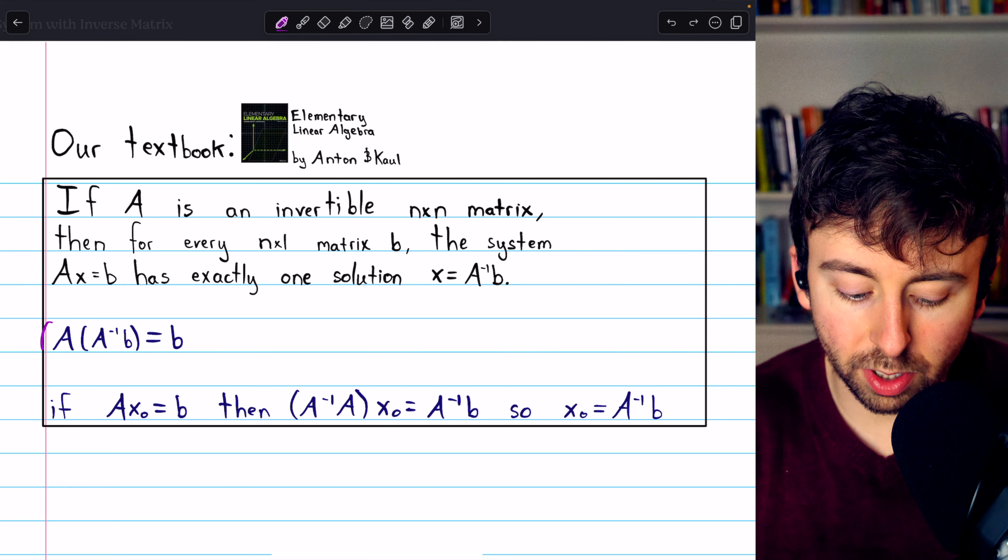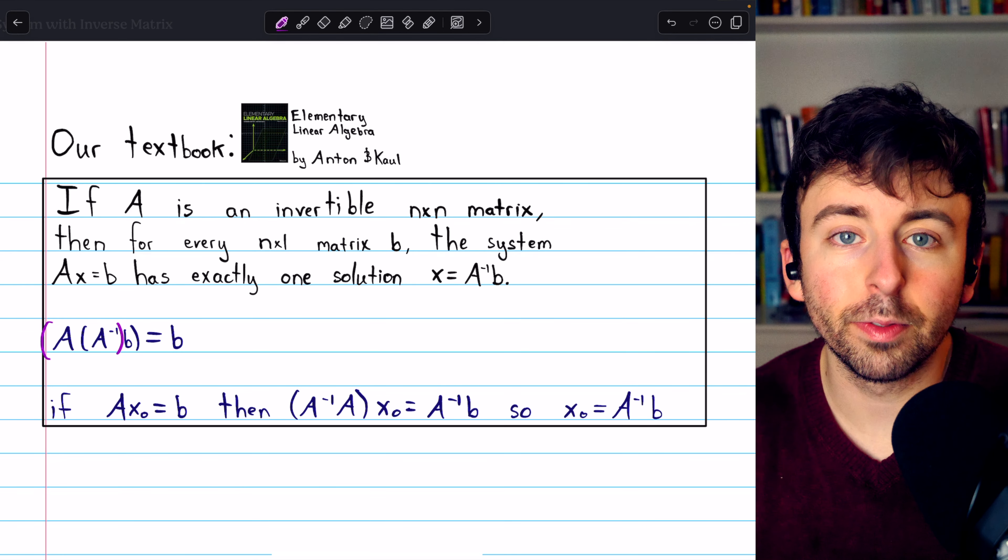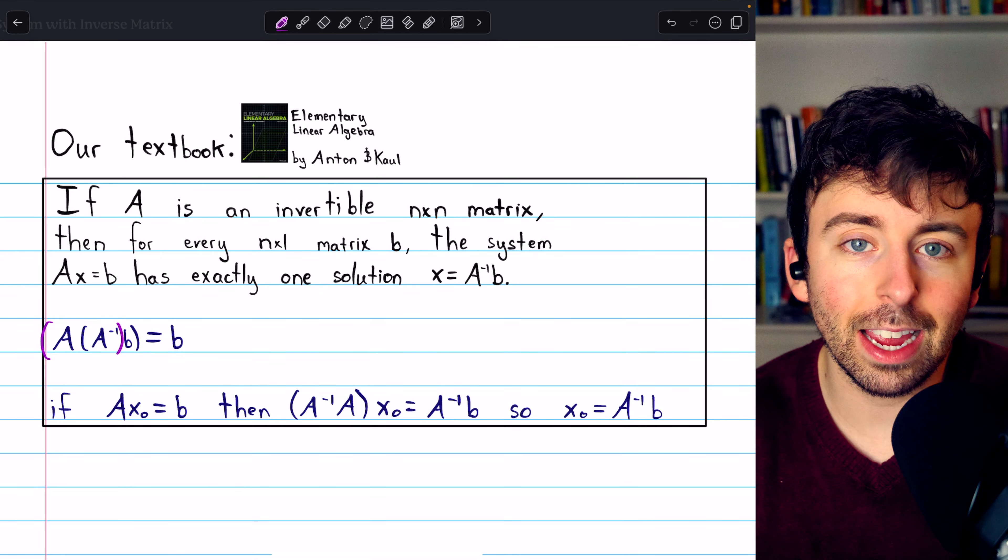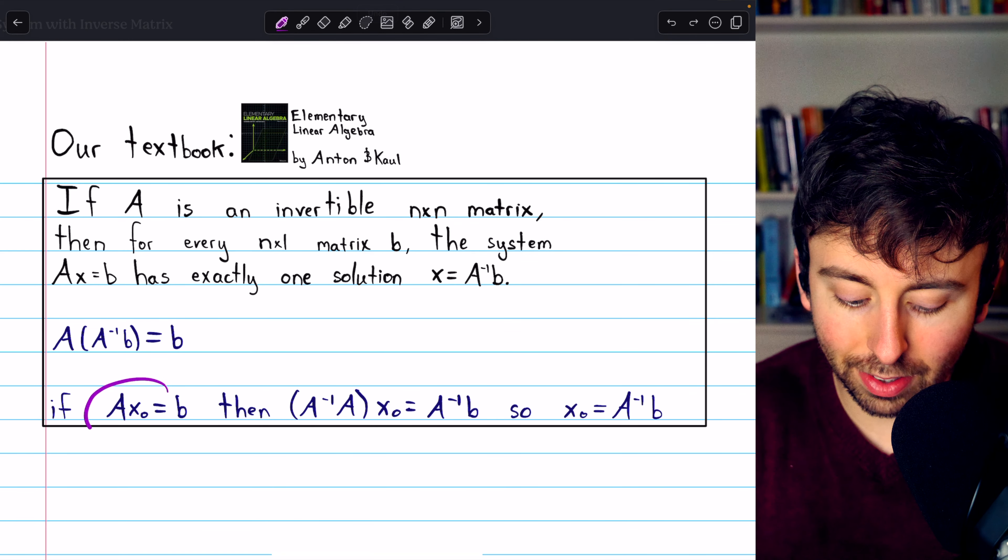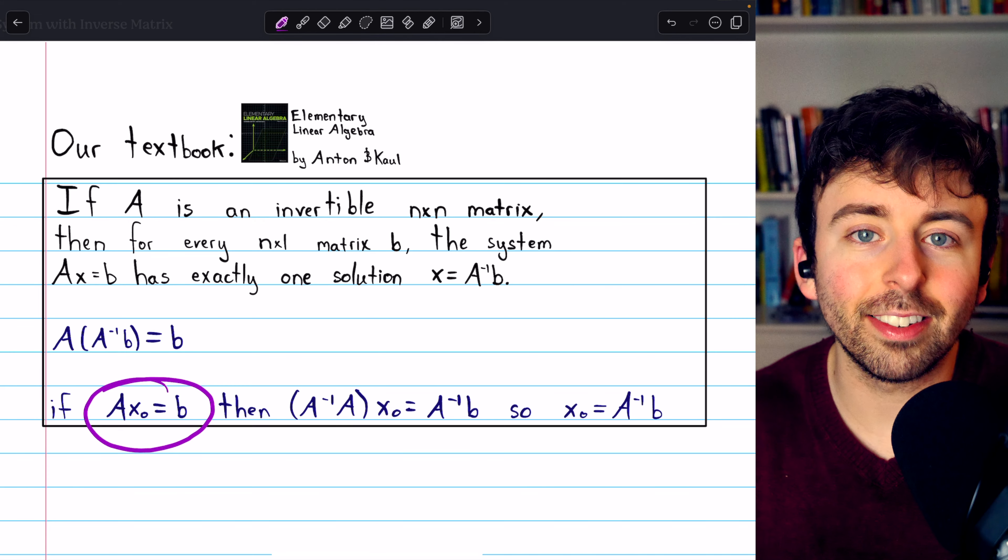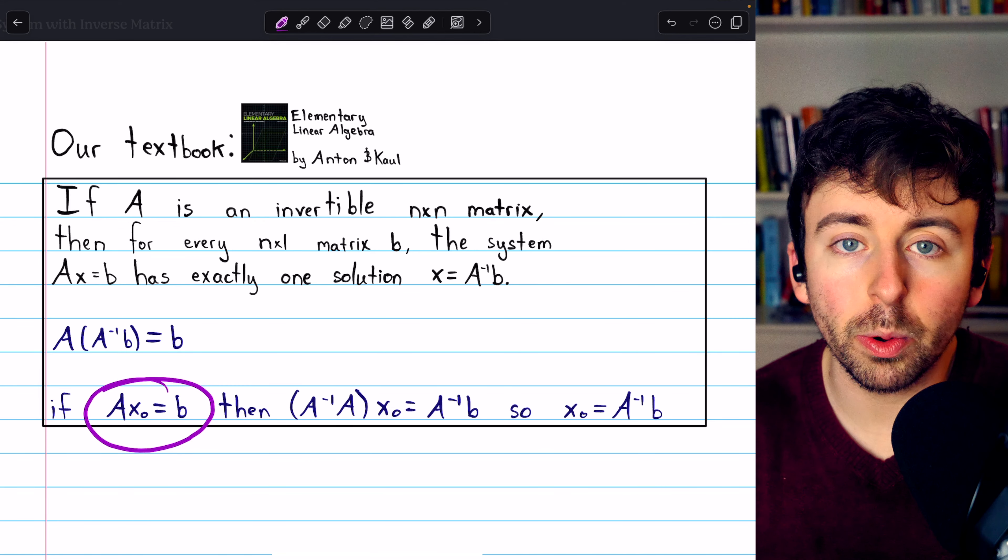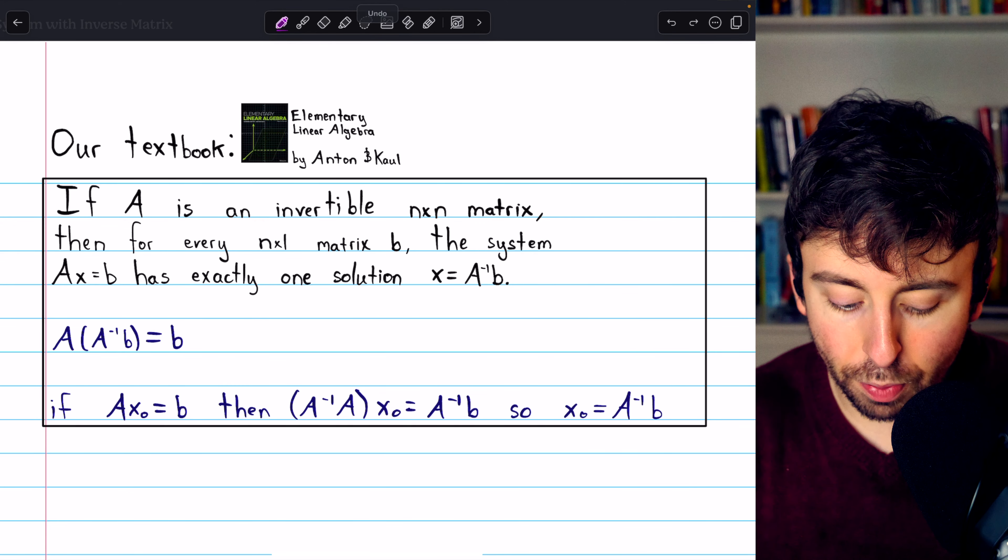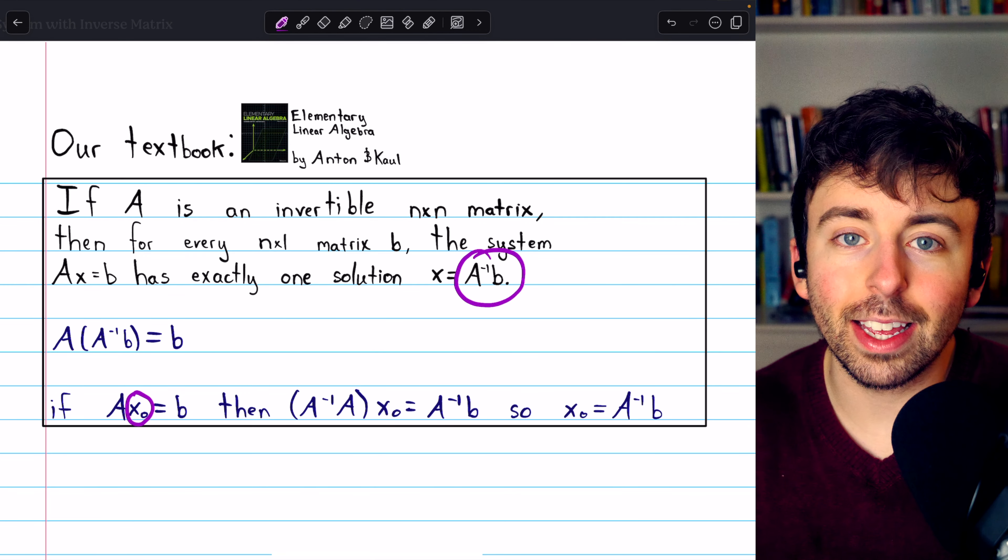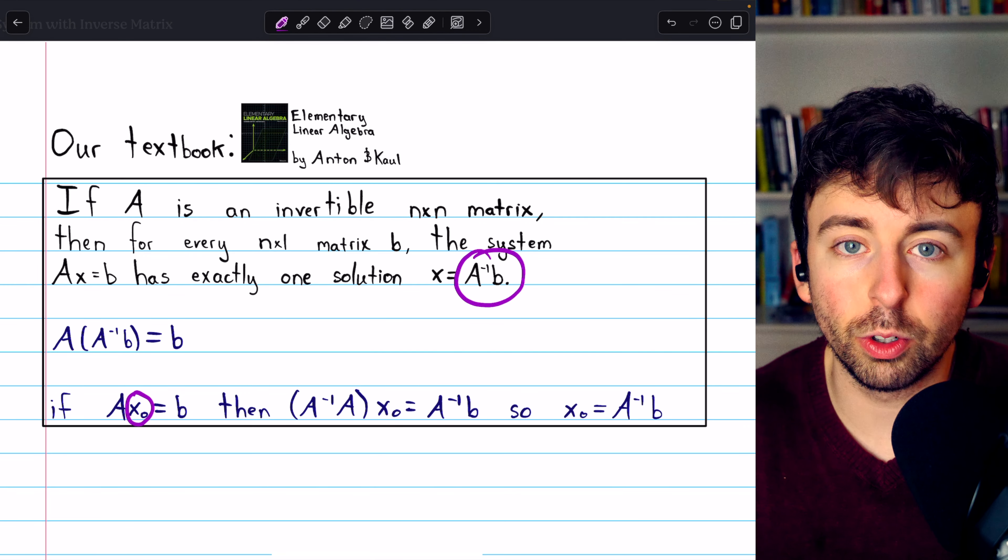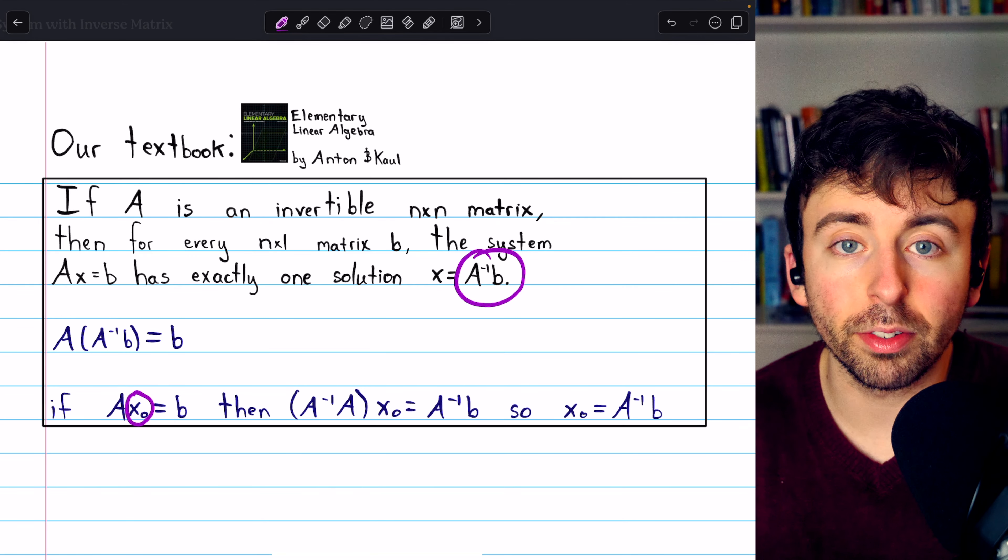We can, of course, choose to do A times A inverse first, because matrix multiplication is associative. Now, the converse would be to assume that we have a solution of the system, say x0, so Ax0 equals B, and we need to prove that x0 equals what we're claiming is the one solution to such a system. This is also straightforward.